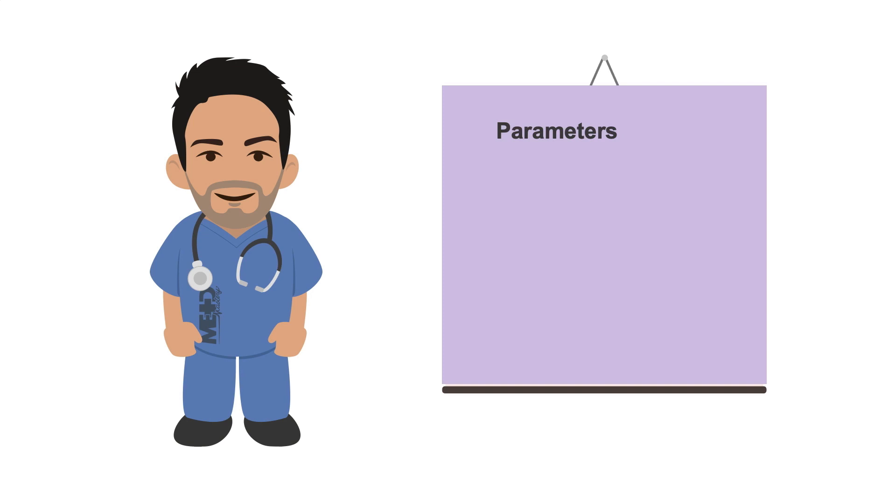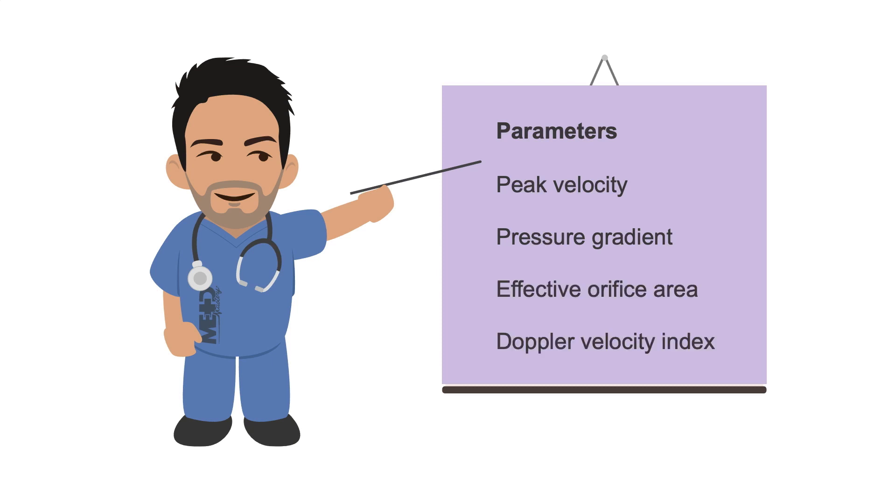The parameters used to evaluate prosthetic heart valve function include the peak velocity, pressure gradient, effective orifice area, and Doppler velocity index.